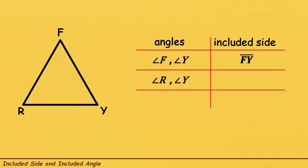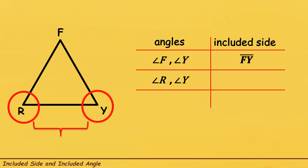Next, let us try to find the Included Side of Angle R and Angle Y. Angle R is here and Angle Y is here, and yung Included Side — ang side na nagdudugtong sa dalawang angles na ito or yung napaggigitnaan nilang dalawang angles — ito yun. Therefore, the Included Side of Angle R and Angle Y is Line Segment RY.